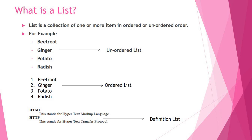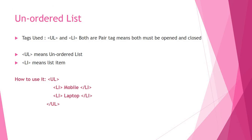First we will see the unordered list. For creating an unordered list we use two tags — tags are the building blocks of HTML, as studied in class 7. The two tags are ul and li; both are pair tags, meaning they must be opened and closed. ul means unordered list and li means list item. For example, we open the ul tag, then use li tags for items like mobile and laptop, then close the ul tag at the end.